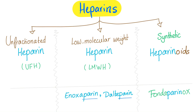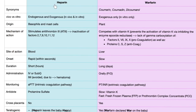Fondaparinux is safe for patients who have heparin-induced thrombocytopenia. In a nutshell, heparin works in vivo and in vitro. It came from basophils and mast cells. The mechanism of action: heparin stimulates antithrombin 3, which will inactivate factors 9, 10, 11, 12, add 2 and 7. Site of action is in the blood; onset is very rapid; duration is short — the half-life is about 2 hours.